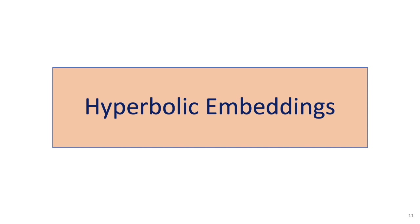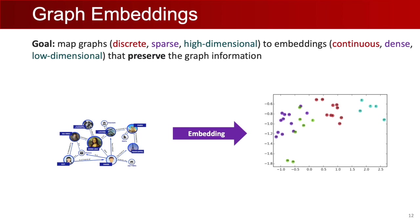Now we have all the necessary tools to learn hyperbolic embeddings. As a quick reminder, graphs are a universal data structure for relational data: nodes represent objects such as entities in a knowledge graph, and edges represent relationships. In graph representation learning, the goal is to find a low-dimensional continuous representation that preserves the graph's information, typically computing one embedding per node. These node embeddings are used in downstream machine learning applications. For example, if two users share many friends in a social network, good representations should reflect this by making their node representations similar in the embedding space.